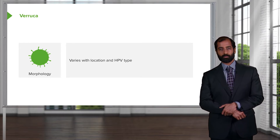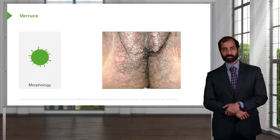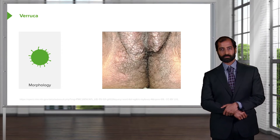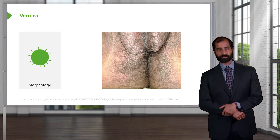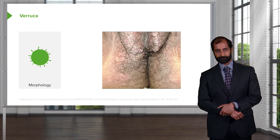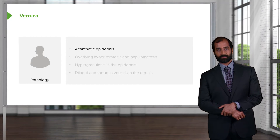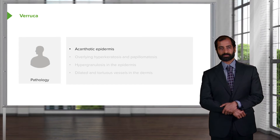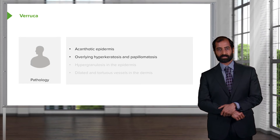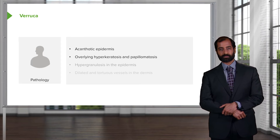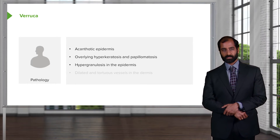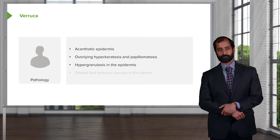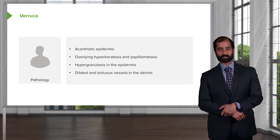Morphology — what are you going to find? Wart appearance varies with location and HPV type. For example, in the vaginal area, HPV6 and 11 are low strain and present as condyloma acuminata. On pathology, there is acanthotic epidermis — acanthosis — along with papillomatosis, hyperkeratosis, and hypergranulosis in the epidermis. This is opposite to psoriasis, where the granular layer is absent or thinned. There are also dilated and tortuous vessels in the dermis due to thickening.